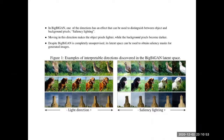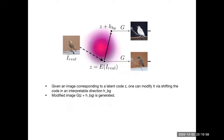Now, here's what they did. They take an image and encode it. The BigBiGAN model has both a discriminator, a generator, and also an encoder trained jointly with the generator that maps images to the latent space. They take the image, map it to the latent space, and then shift it in the interpretable direction h_bj. They generate both images using the model's generator, and now they have an image and its potential saliency mask.